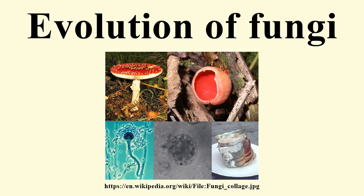There is also a case for a fungal affinity for the enigmatic microfossil ornativellium. Since the fungi form a sister group to the animals, the two lineages must have diverged before the first animal lineages, which are known from fossils as early as the Ediacaran. In contrast to plants and animals, the early fossil record of the fungi is meagre.